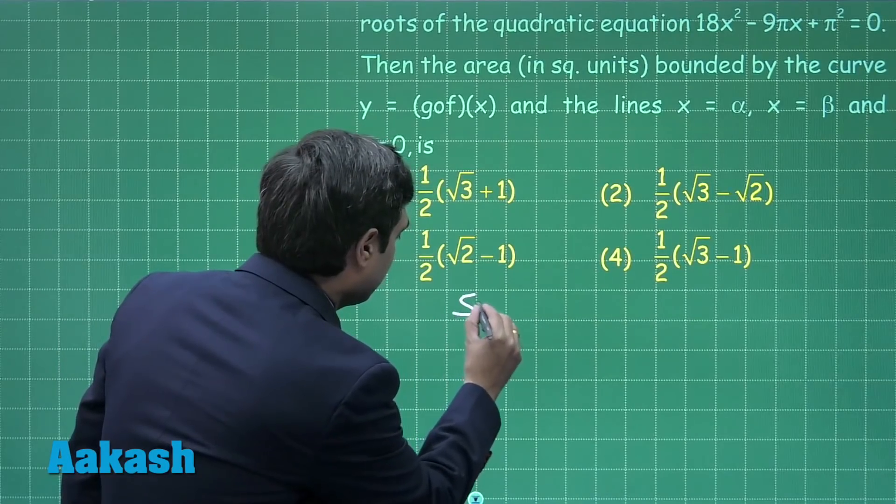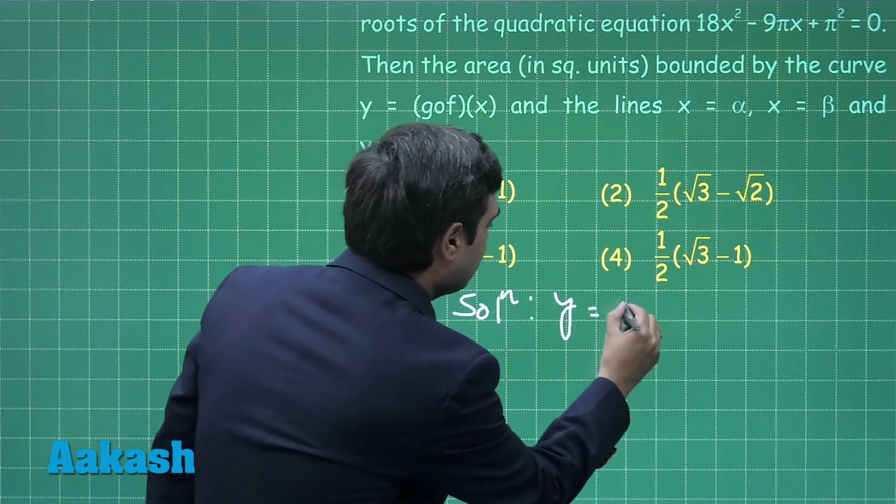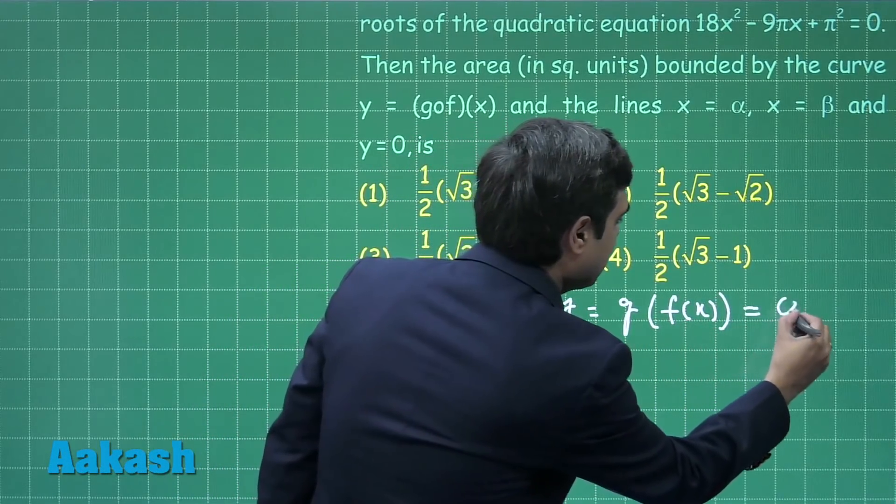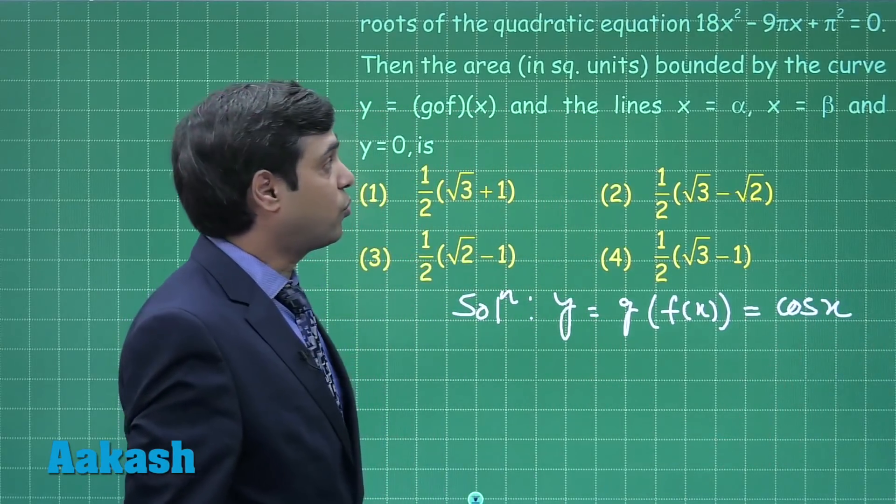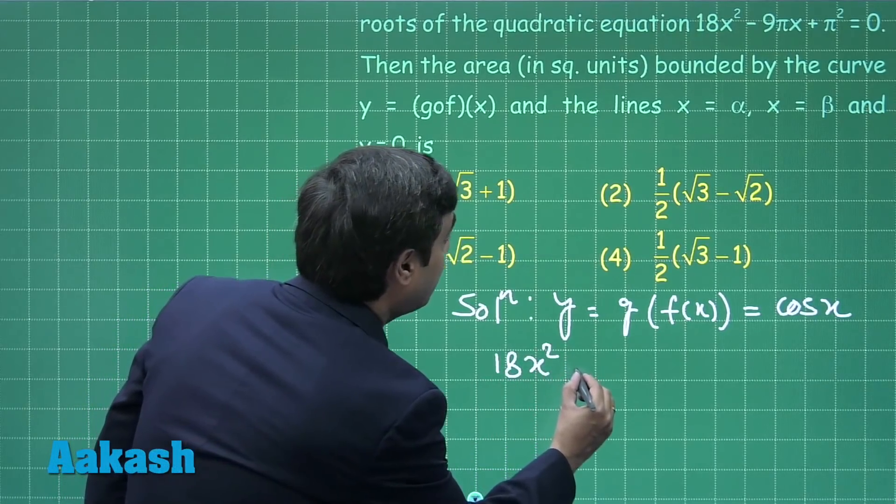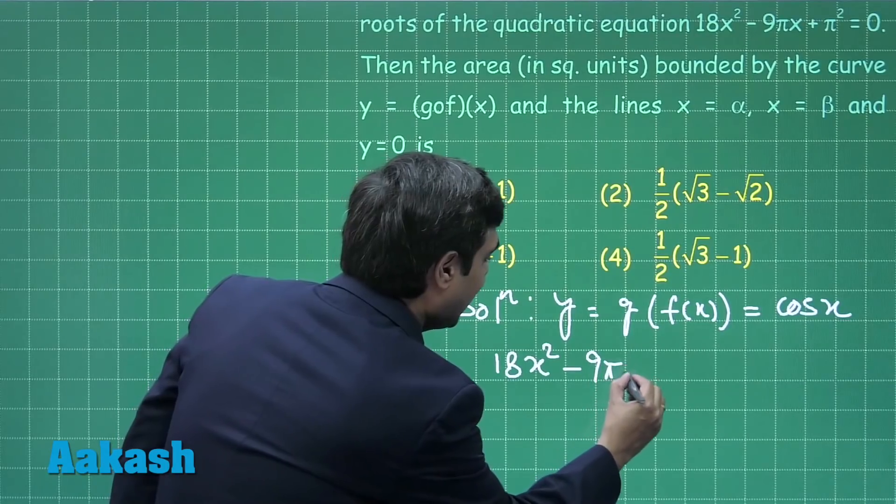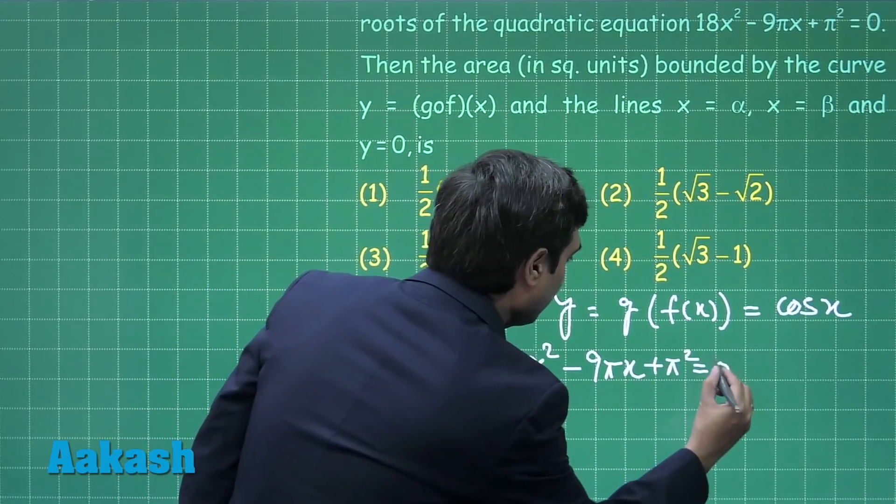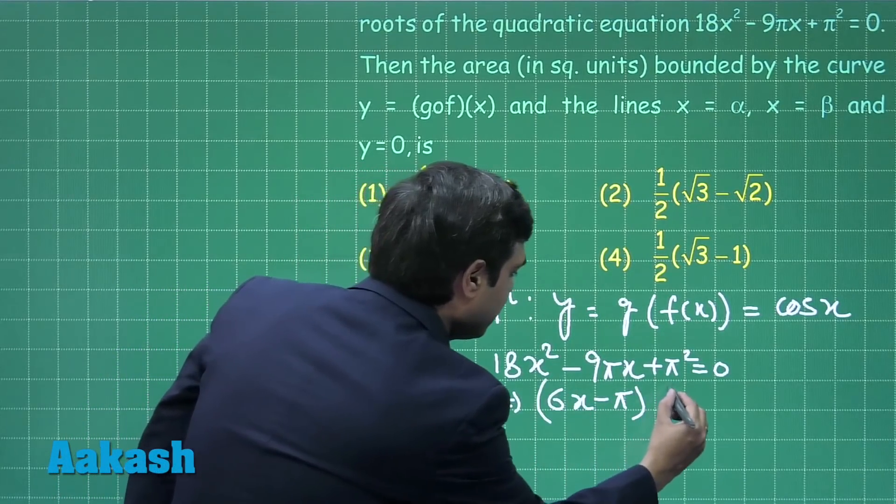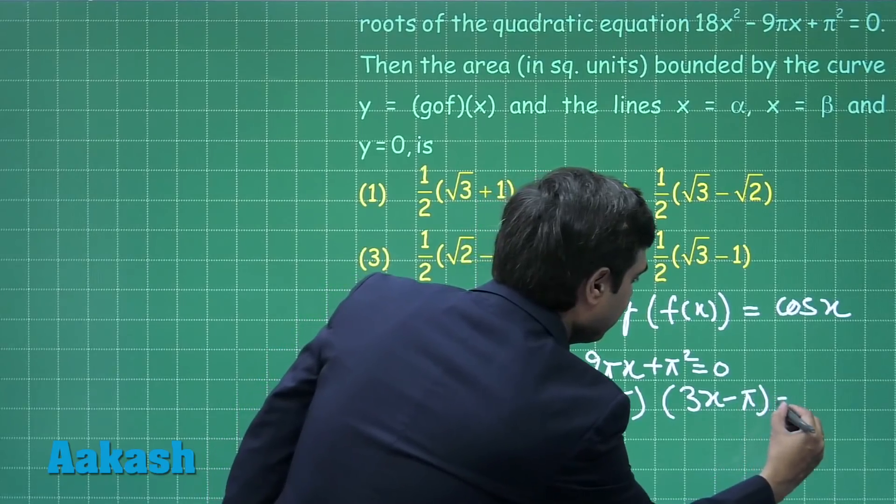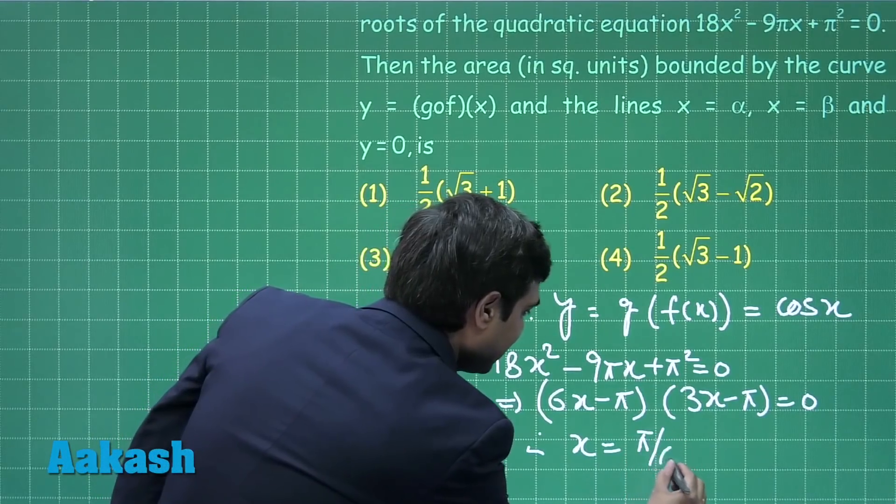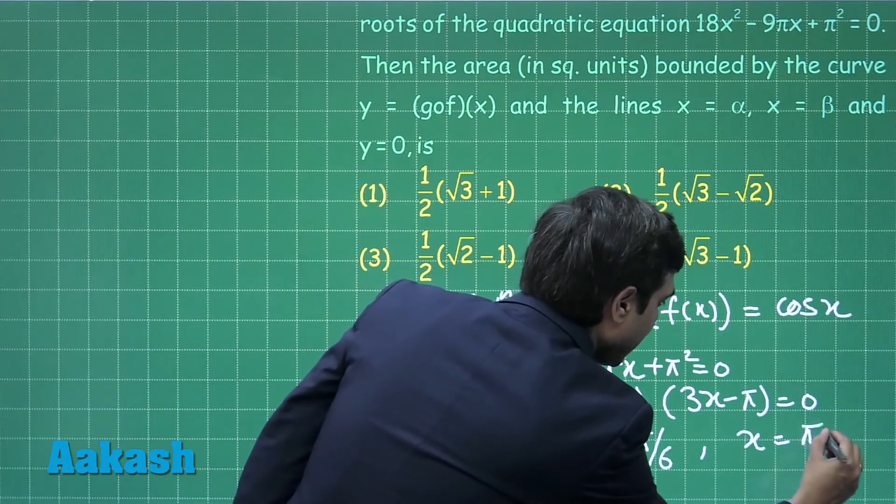Clearly, y equals g of f(x) equals cos x. Now, the quadratic equation is given. If we solve the quadratic equation, which is 18x square minus 9 pi x plus pi square equals 0, we can see here 6x minus pi and 3x minus pi as the factors.